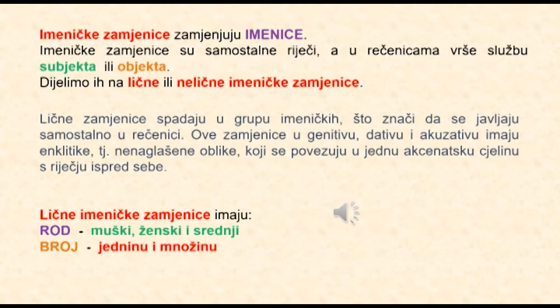Lične zamjenice spadaju u grupu imeničkih, što znači da se javljaju samostalno u rečenici, a ove zamjenice u genitivu, dativu i akuzativu imaju enklitike, to jest nenaglašene oblike koji se povezuju u jednu akcenatsku cjelinu sa riječju ispred sebe. Lične imeničke zamjenice razlikuju sva tri roda: muški, ženski i srednji, a imaju oblike za jedninu i množinu.